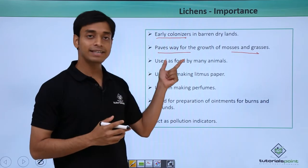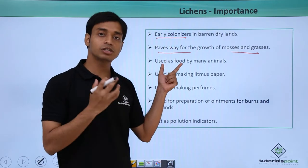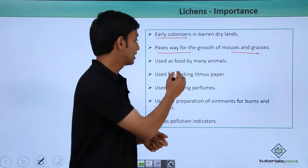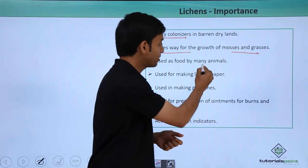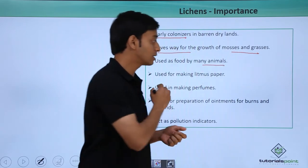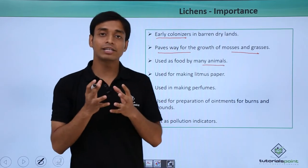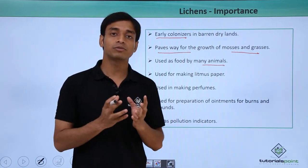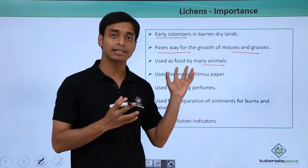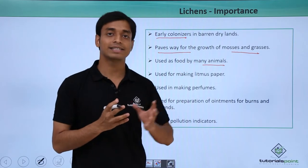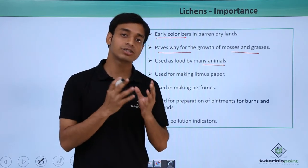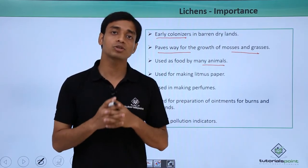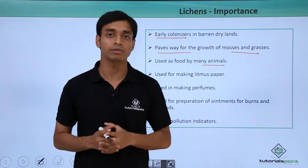Some species of these lichens are used as staple food by many animals. In fact, in the case of the tundra region, certain types of lichens are used as staple food by organisms, mostly animals.